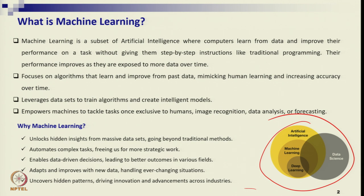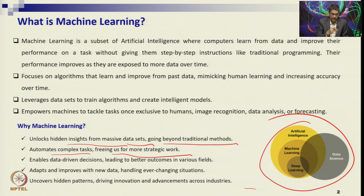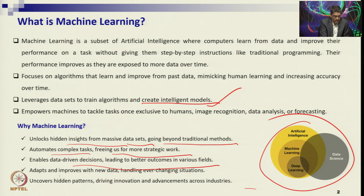Why machine learning? Here you can see a couple of points: it unlocks hidden insights from massive data sets, going beyond traditional methods. It automates complex tasks and frees us to think about more strategic aspects. Machine learning creates intelligent models by learning data patterns, enabling data-driven decision making. It also adapts and improves with new data, handling ever-changing situations.